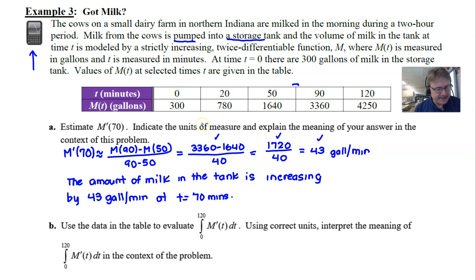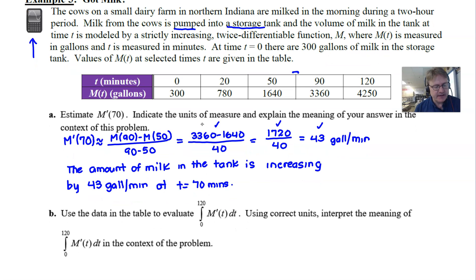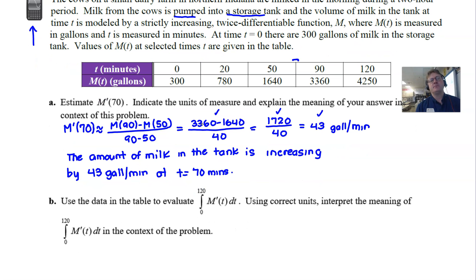Part b: use the data in the table to evaluate the definite integral of M prime of t from 0 to 120, use units, interpret the meaning. Well, this is a little bit more into our recent material, unit 6 per se, and we have to think about if we are going to integrate an M prime. We just simply realize that the integration symbol and the prime symbol are going to do away with each other. They're basically going to cancel each other out and so you would just get M.